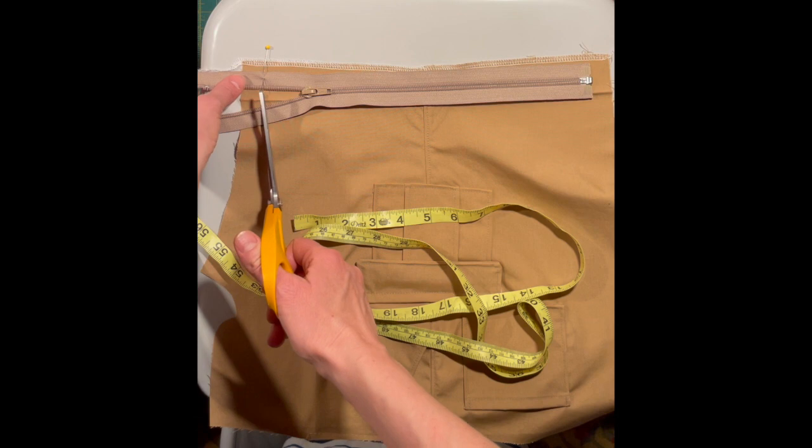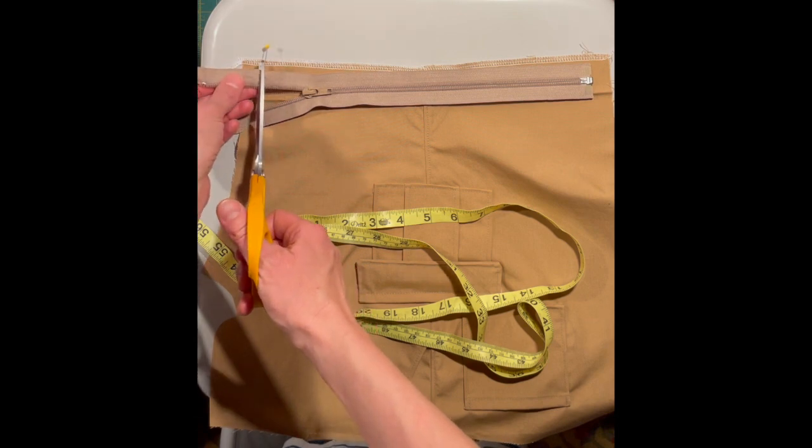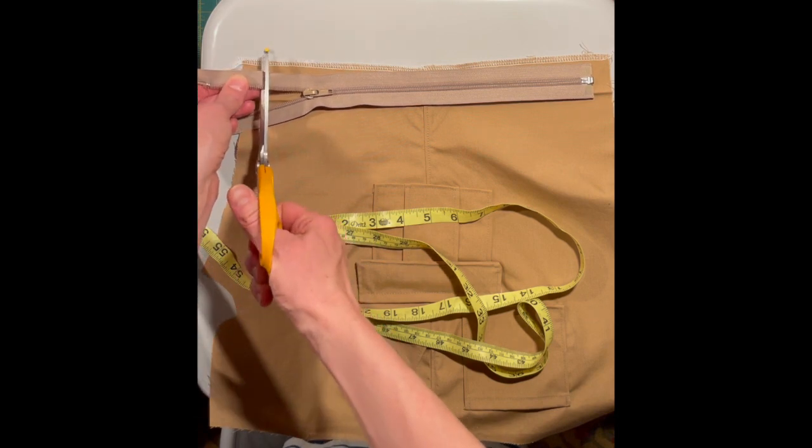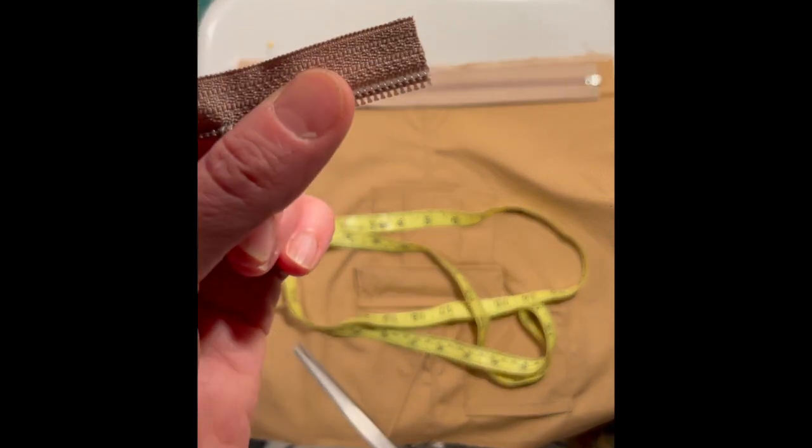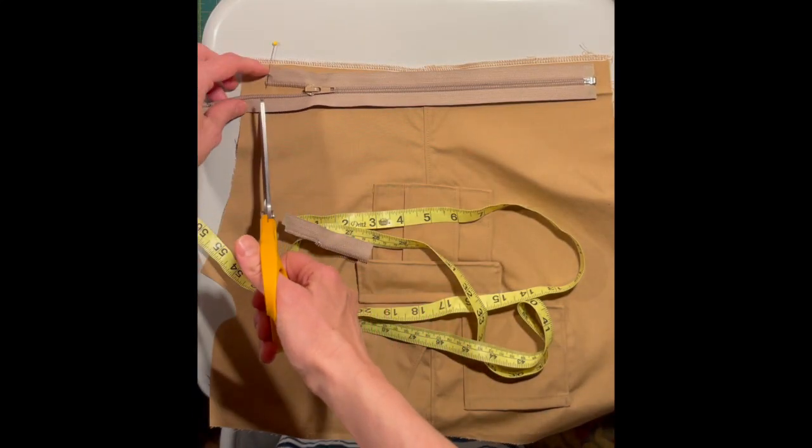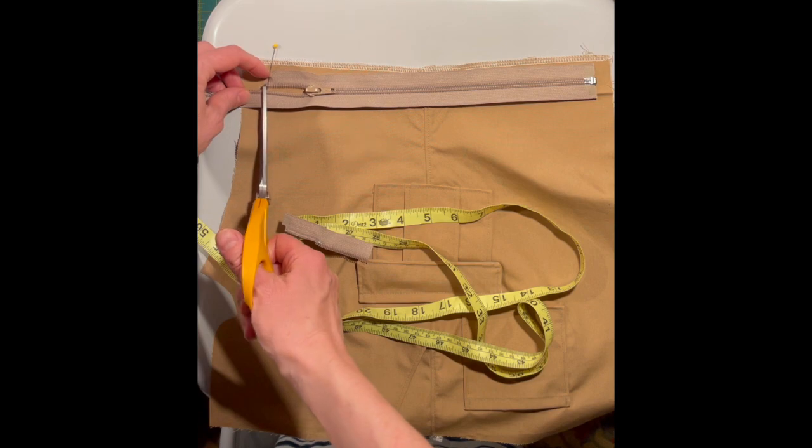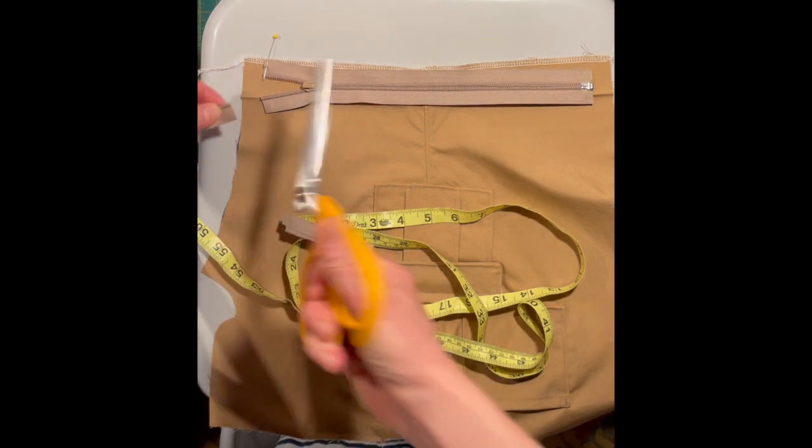We take the scissors and just cut it off. It's a plastic zipper, so it's very easy to cut off. You cut off the other side just the same.